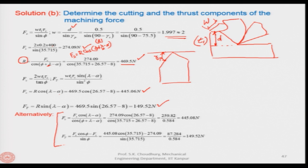There is an alternate way: using the formula derived during the merchant's circle diagram discussion, all these values will be known — put in the value of Fs and so on, and you will find the same result. This is an alternate way of solving this problem.